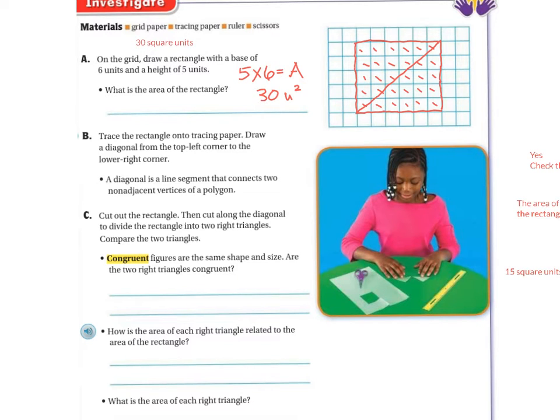And then, so a diagonal line is a segment that connects the two non-adjacent vertices of a polygon. So right here's my diagonal line that's connecting, right? And then they want you to cut it out and cut these two in half. So now we're going to pretend that I have two congruent triangles.